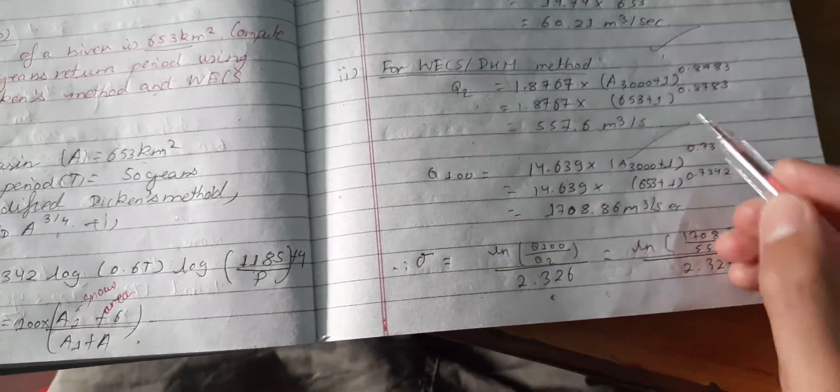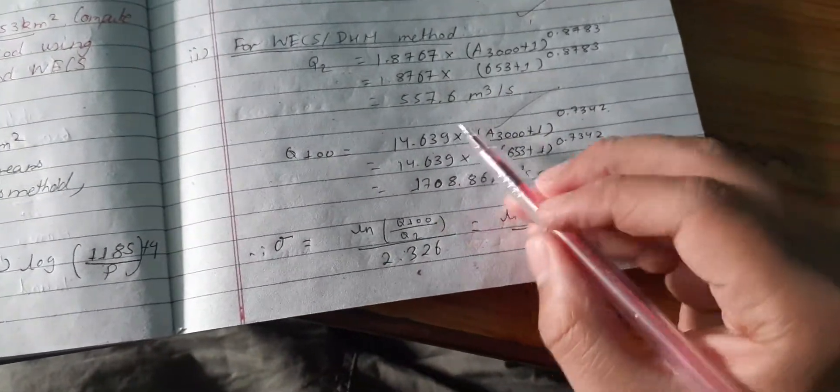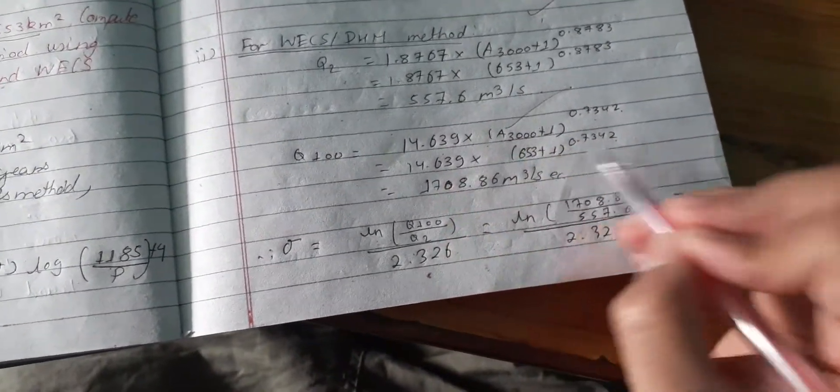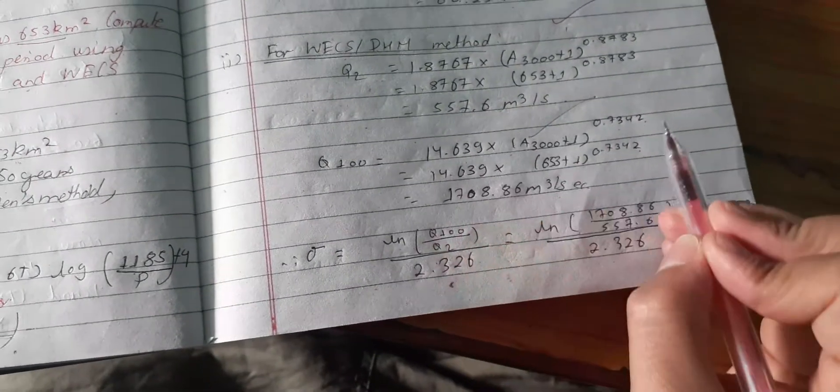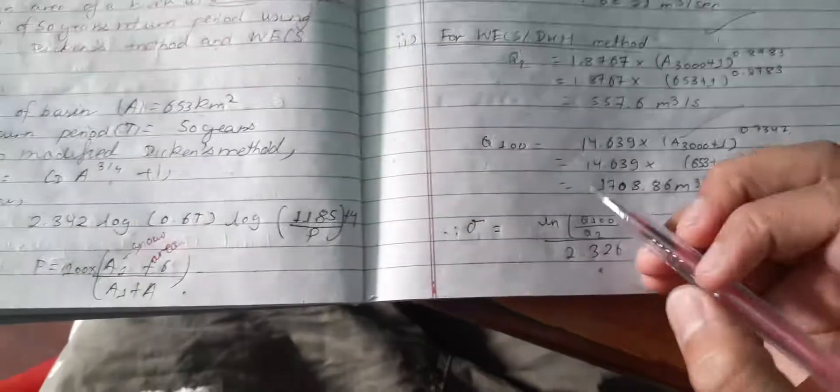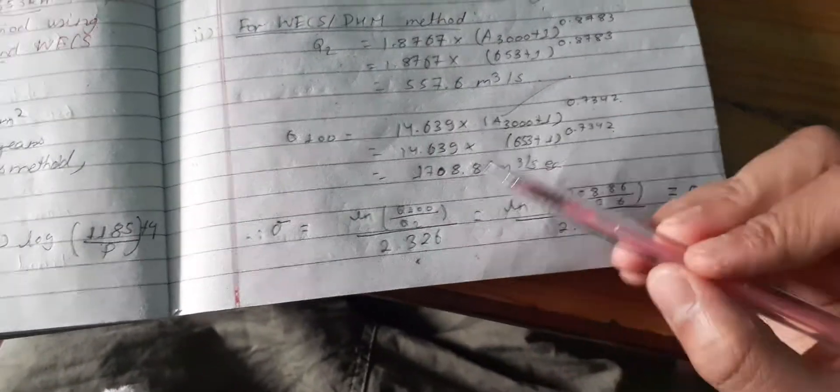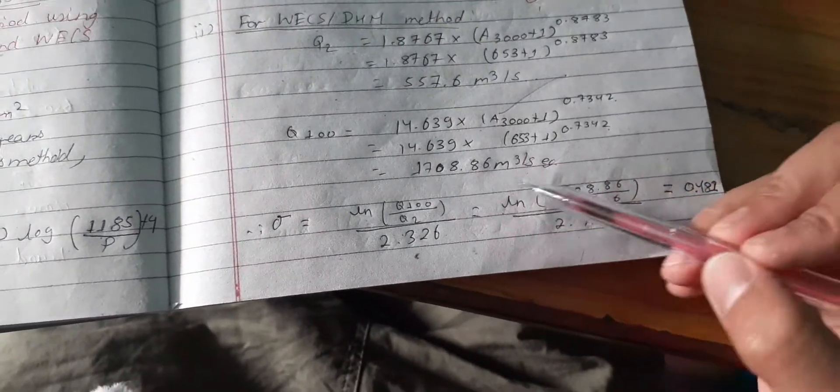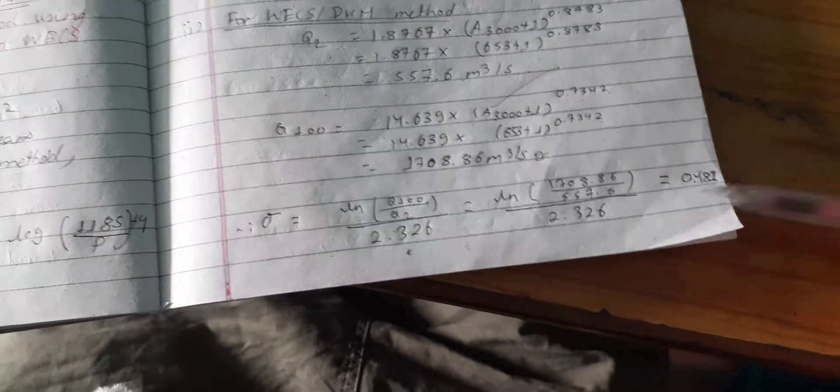Now we put in the formula, we got area 653 from here, it is already given in the question. We need to find this, and later again we find Q₁₀₀. Here we got a formula, there is slight difference. And now the sigma parameter.